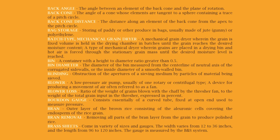Bran: the outer layer of brown rice consisting of the aleurone cells covering the endosperm of the rice grain. Bran removal: removing all parts of the bran layer from the grain to produce polished rice. Brass sheets come in a variety of sizes and gauges; the width varies from 12 to 36 inches and the length from 96 to 120 inches; the gauge is measured by the B and S system.